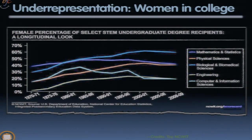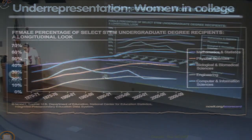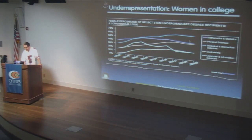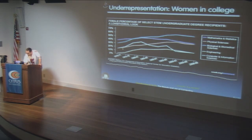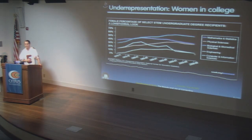Looking at female percentage in STEM undergraduate degrees going back to the 1970s — 40 years of data — computer science starts growing but never really gets above 20%, and has come back down. Biology went from 30% to nearly 60%. Engineering is similarly low. Computer science is now the lowest of all STEM fields at around 20%.